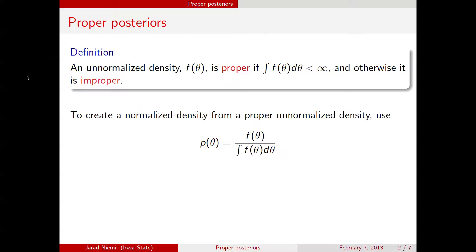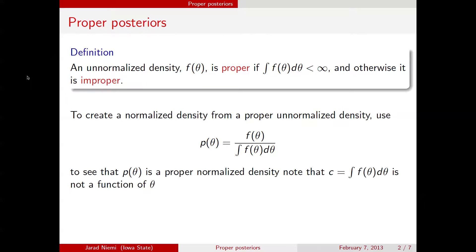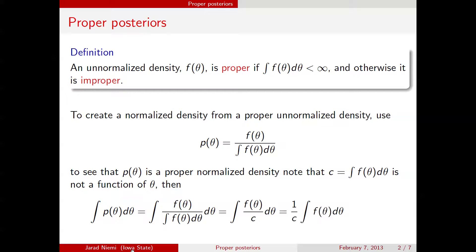As another reminder, we can always create a normalized density — that is, one that integrates to one — from a proper unnormalized density if we just divide the unnormalized density by its normalizing constant. We note that the part in the denominator is not a function of theta, so we call it c. We can show the integral of the normalized density by plugging in the definition and removing the denominator from the integral, since it does not depend on theta. That integral is itself c, and so we have the ratio c over c, which is one.